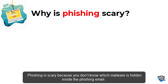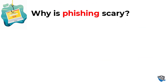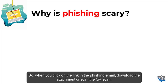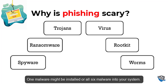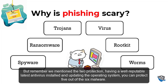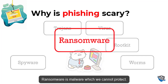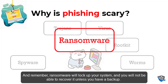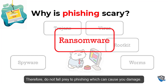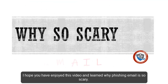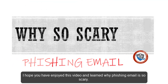Phishing is scary because you don't know which malware is hidden inside the phishing email. When you click a link, download an attachment, or scan a QR code, one or all six malware types might be installed on your system. With a reputable antivirus and updated operating system, you can protect against five of the six — but ransomware remains unprotected. Ransomware will lock up your system and you will not be able to recover it unless you have a backup. Do not fall prey to phishing.